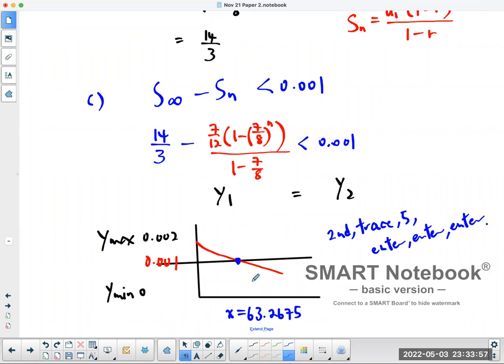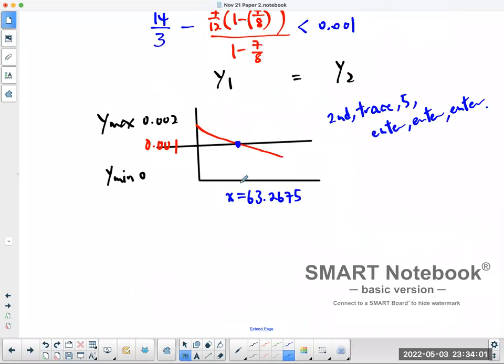Okay, so that means the 63rd term, the n value would be still a little bit bigger than 0.001. The 64th term is going to be smaller than 0.001.